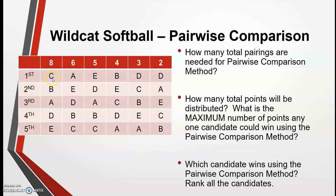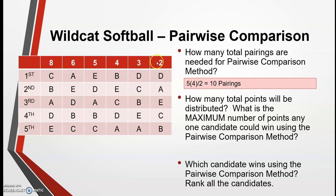How many candidates do we have? We have 5. So we have 5 times (5 minus 1), or 5 times 4 is 20, divided by 2 — so there will be 10 pairings or 10 points needed for this election. How many total points will be distributed? The total points is the same as the total pairings, so since there are 10 pairings, there will be 10 total points.